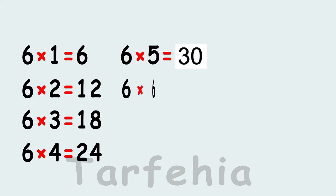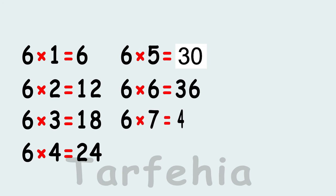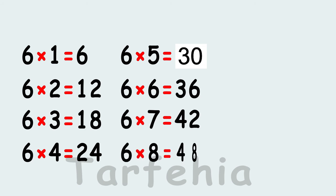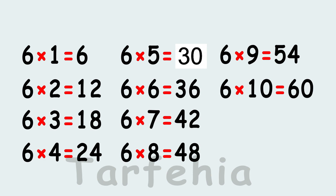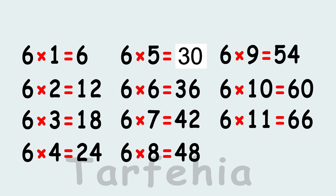Six times six equals thirty-six. Six times seven equals forty-six. Six times eight equals forty-eight. Six times nine equals fifty-four. Six times ten equals sixty. Six times eleven equals sixty-six. Six times twelve equals seventy-six.